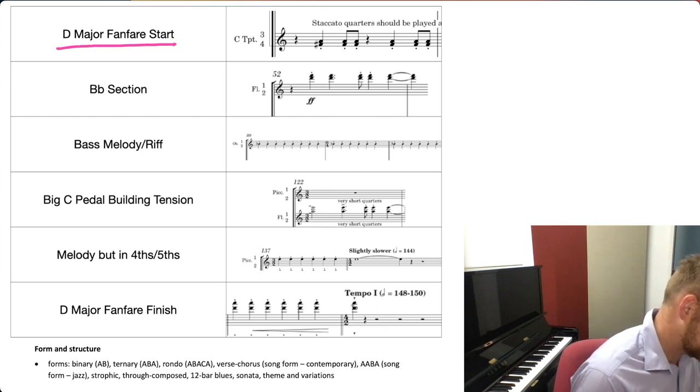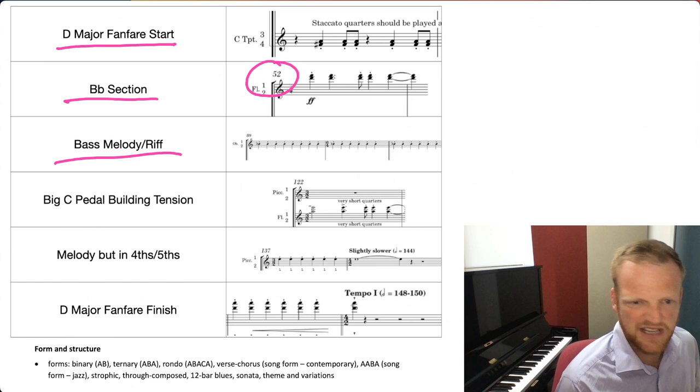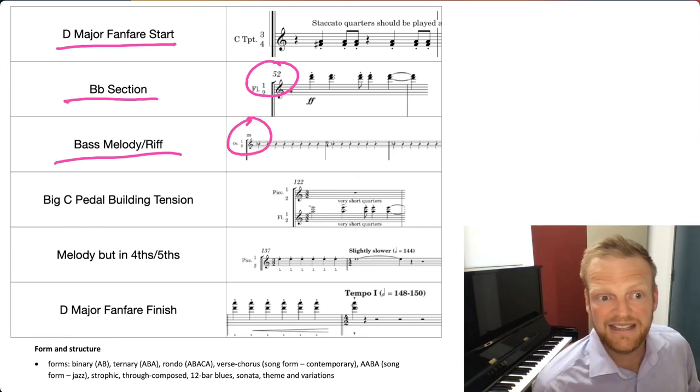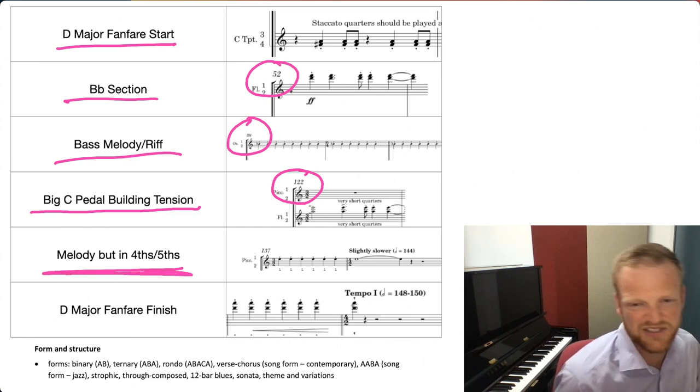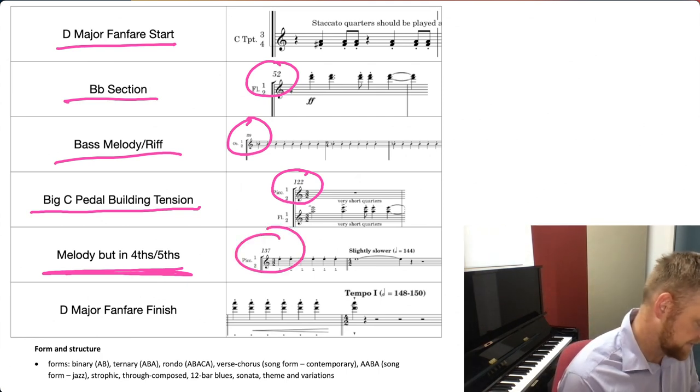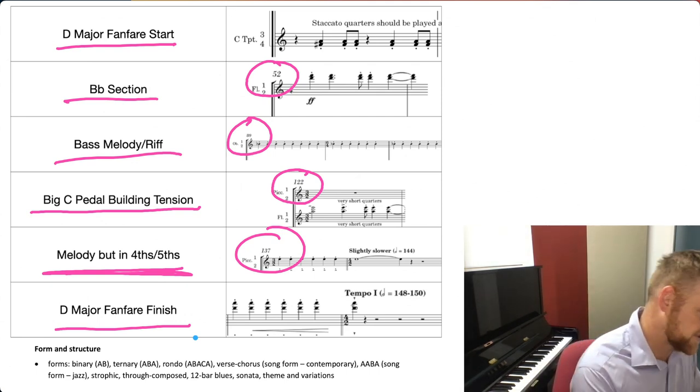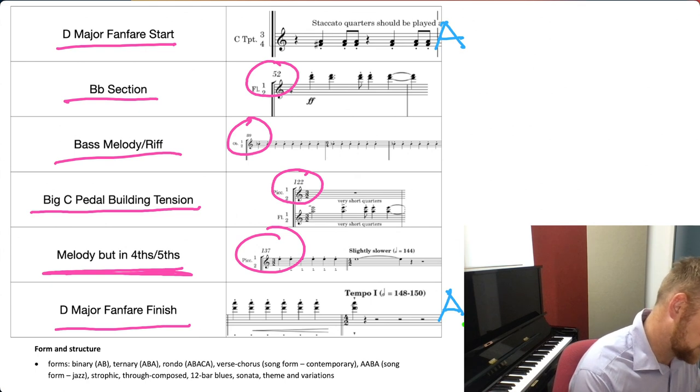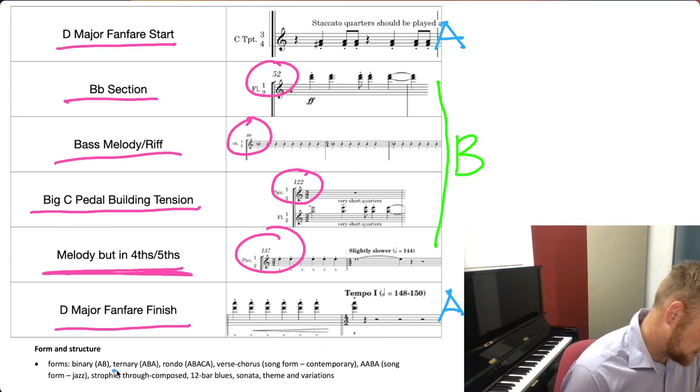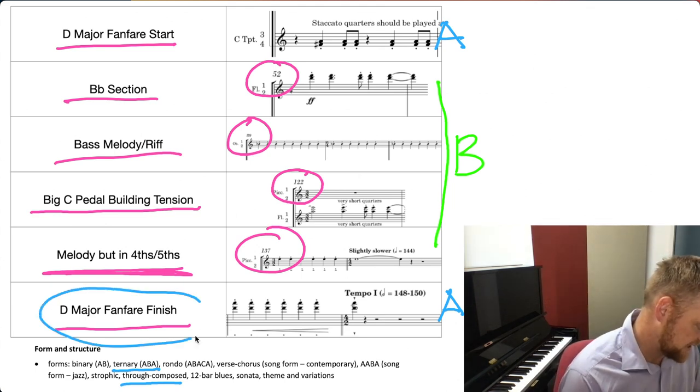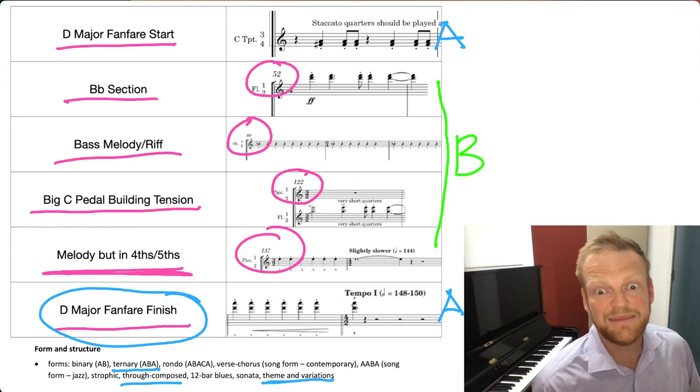Talking about form, here we go. D major fanfare start. We've got a B flat section around bar 52. The bass melody kind of riff section that happens around bar 80. All of these sections are signaled by double bar lines. We've got a big C pedal tension point at bar 122. Then we've got another section where there's a sort of melody that happens around 138. And then we go back to our fanfare finish. So if we kind of analyze it, I guess we've kind of got an A, an A, and then we've got this stuff here is kind of a B section, maybe. So the form, well, I mean, could it be ternary? Maybe, I guess. It's not really though. Could it be through-composed? Not really, because the fanfare comes back at the end here. So I mean, I think it's probably just theme and variation is how I would describe it. Or theme and gradual variation.